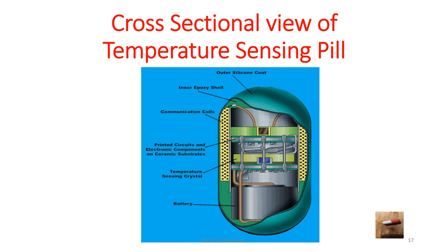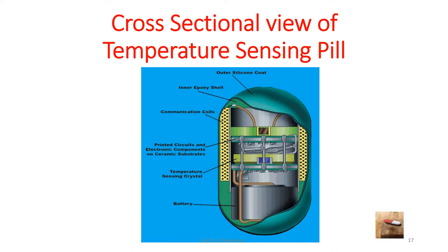In the temperature sensing pill cross-sectional view, there is an outer silicon coat, followed by an inner epoxy shell. Inside the inner epoxy shell, there are communication coils, printed circuits, and electronic components on ceramic substrates. Inside that, there is a temperature sensing crystal and battery connection for the operation of the radio pill.